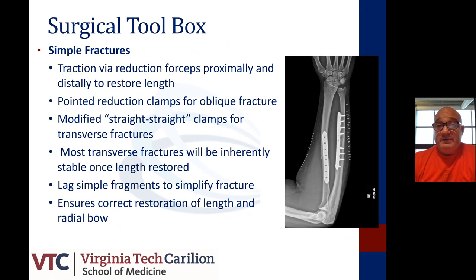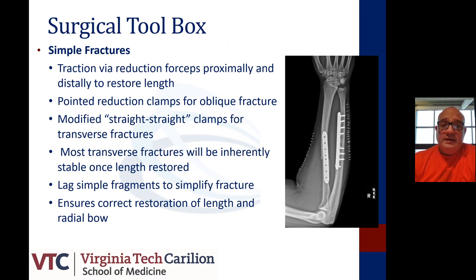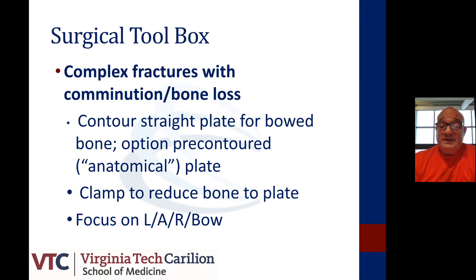Our surgical toolbox for simple fractures includes traction applied distally to restore length. Use pointed reduction clamps for oblique fractures, and a straight clamp for transverse fractures. Most transverse fractures will be inherently stable once length is restored. Use lag screws on simple fragments to simplify the fracture, and ensure correct restoration of length and the radial bow. For comminuted fractures with significant bone loss, contour a straight plate for the bowed bone — pre-contoured anatomical plates are a good option. Clamp bone to plate, and focus on length, alignment, rotation, and restoration of the bow.